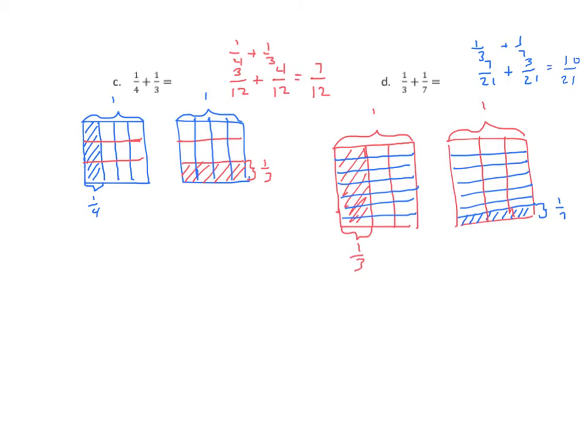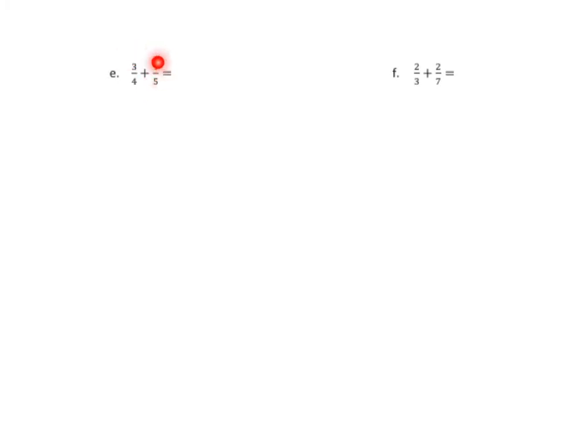Let's do one more set — these are slightly different. If we look at these problems, we see that we now have non-unit fractions. Unit fractions have one in the numerator; non-unit fractions have values greater than one. So three-fourths is not a unit fraction. One-fifth is. Two-thirds is not a unit fraction, nor is two-sevenths.